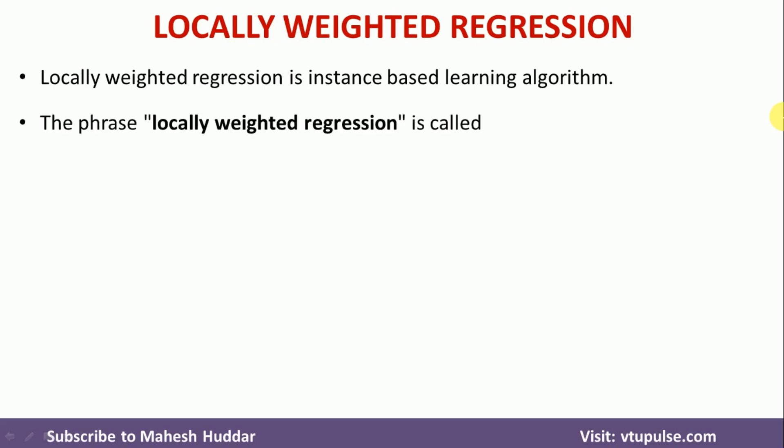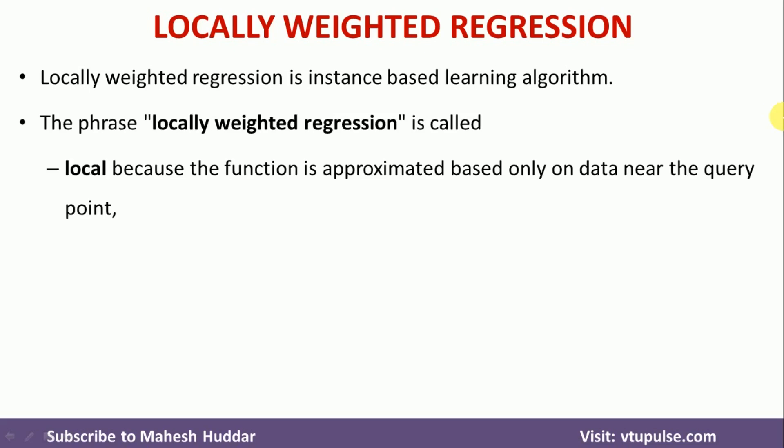The phrase 'locally weighted regression' is called local because the function is approximated based only on data near the query point. We don't consider all the data points — we consider only the data points near to the query point. That is the first reason why it is called 'locally'.